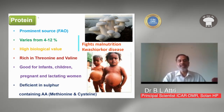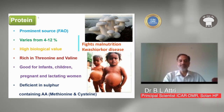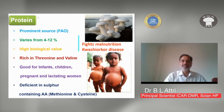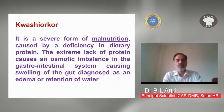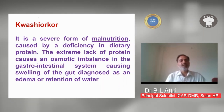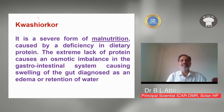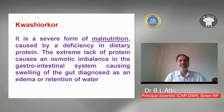Mushrooms also help fight mild malnutrition. In some African countries, kwashiorkor disease is prevalent — where children's bellies bulge out, growth is stunted, skin is ruptured, and hair is in poor condition. Kwashiorkor is a severe form of malnutrition caused by a deficiency in dietary protein. In these countries, people take carbohydrate-rich food but lack protein. The extreme lack of protein causes an osmotic imbalance in the gastrointestinal system, causing swelling of the gut diagnosed as edema or water retention, which causes the belly to bulge out.